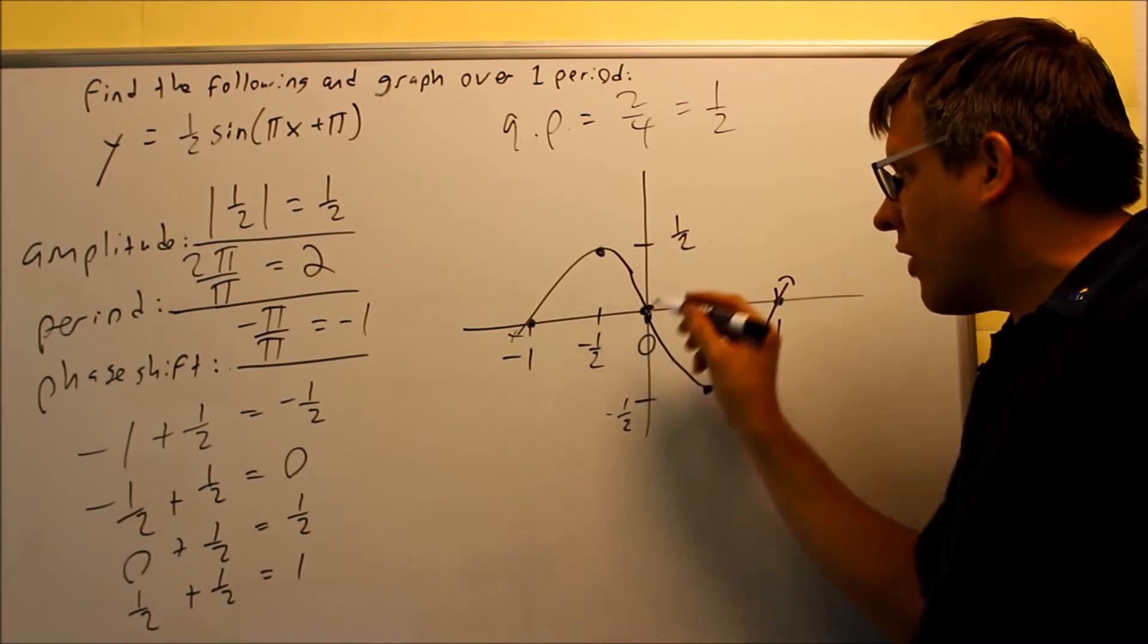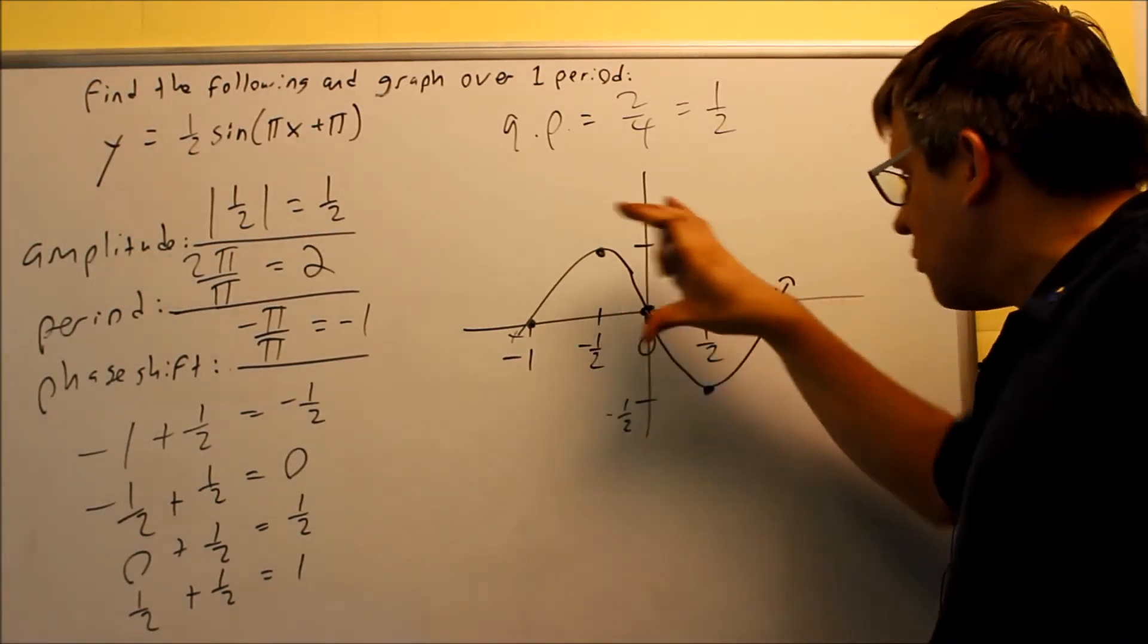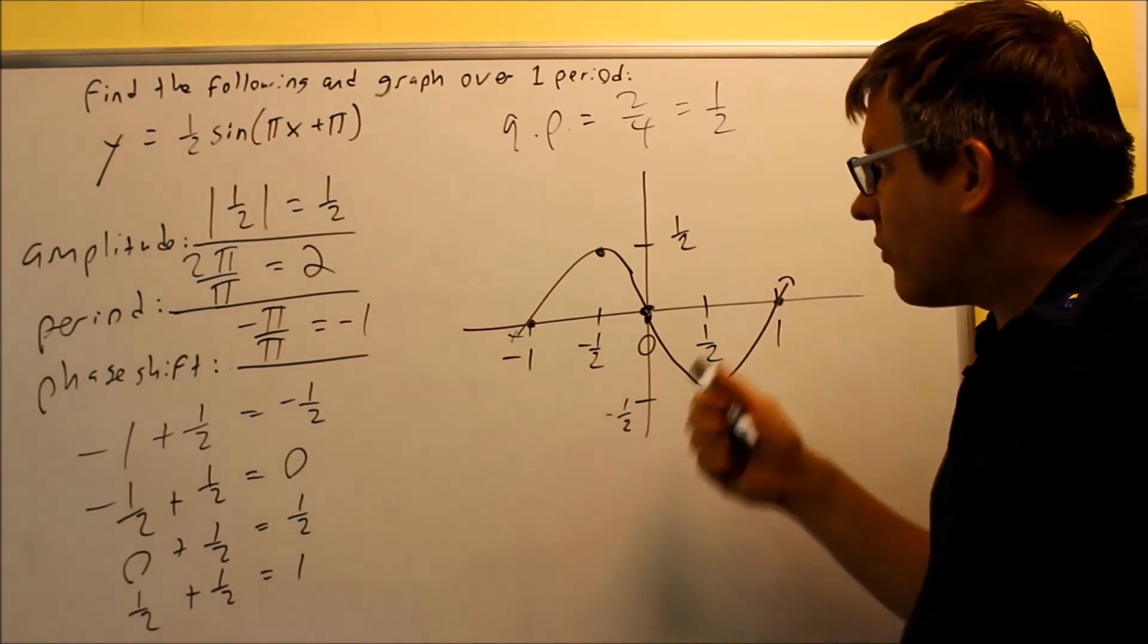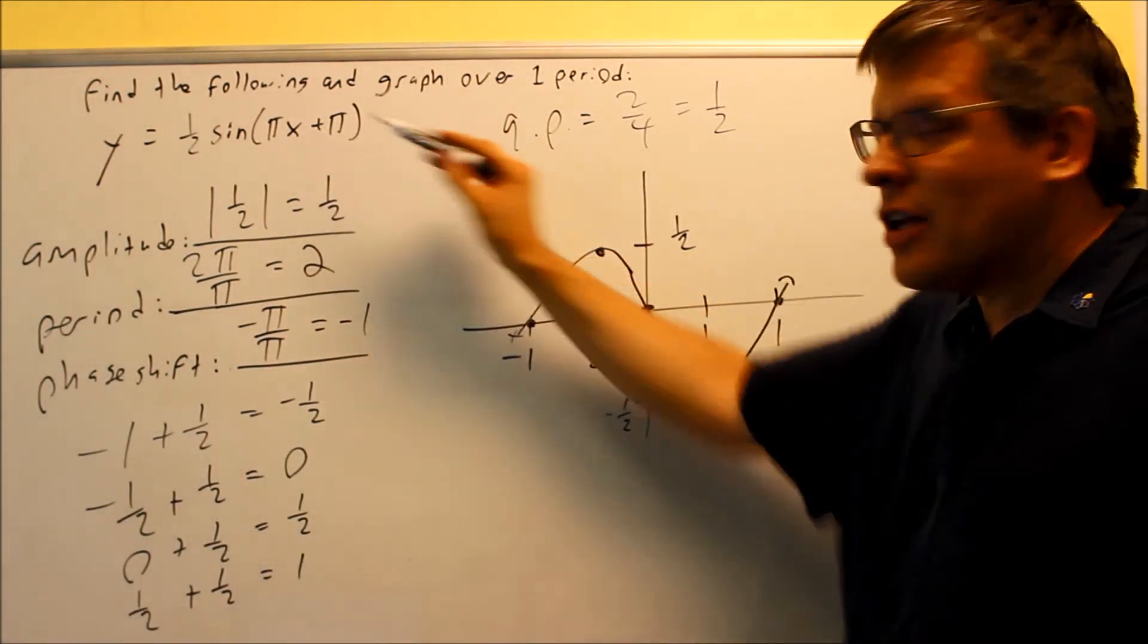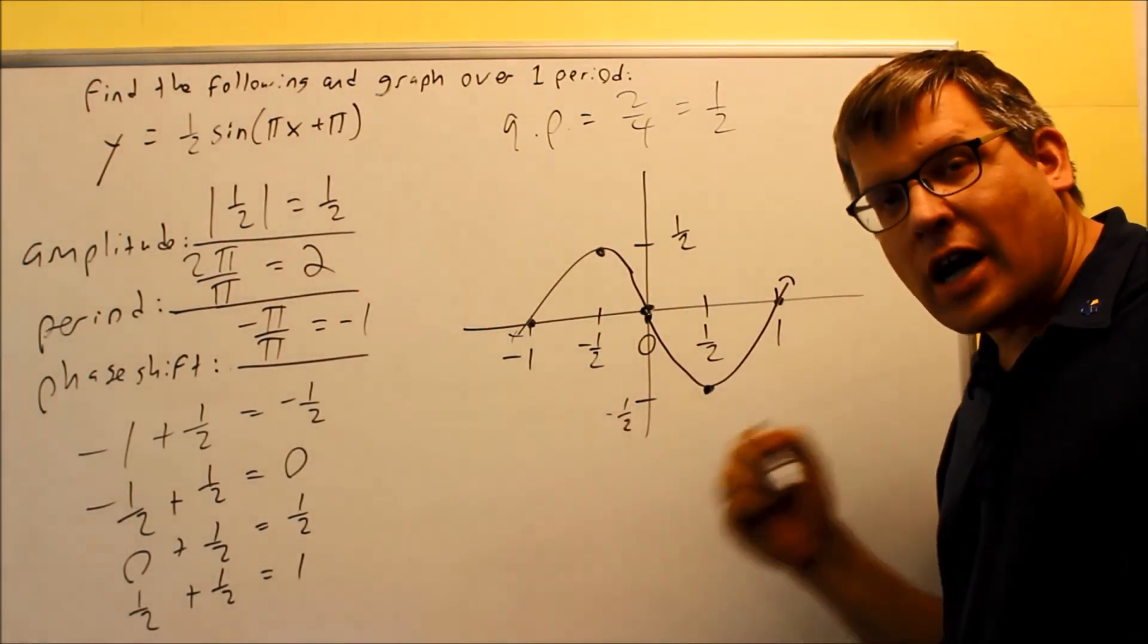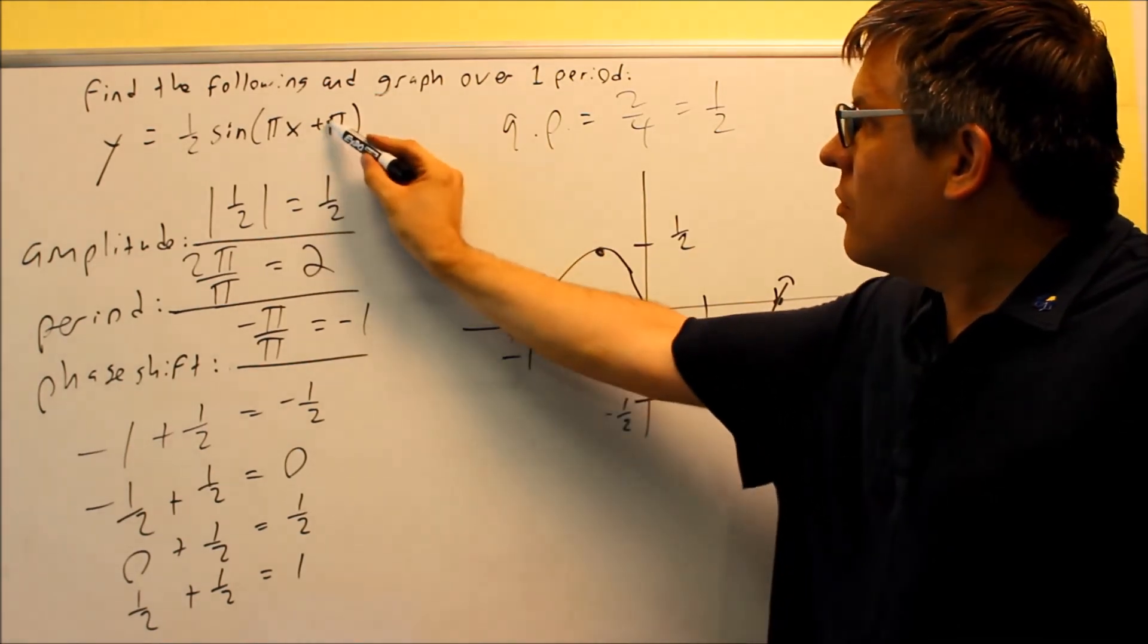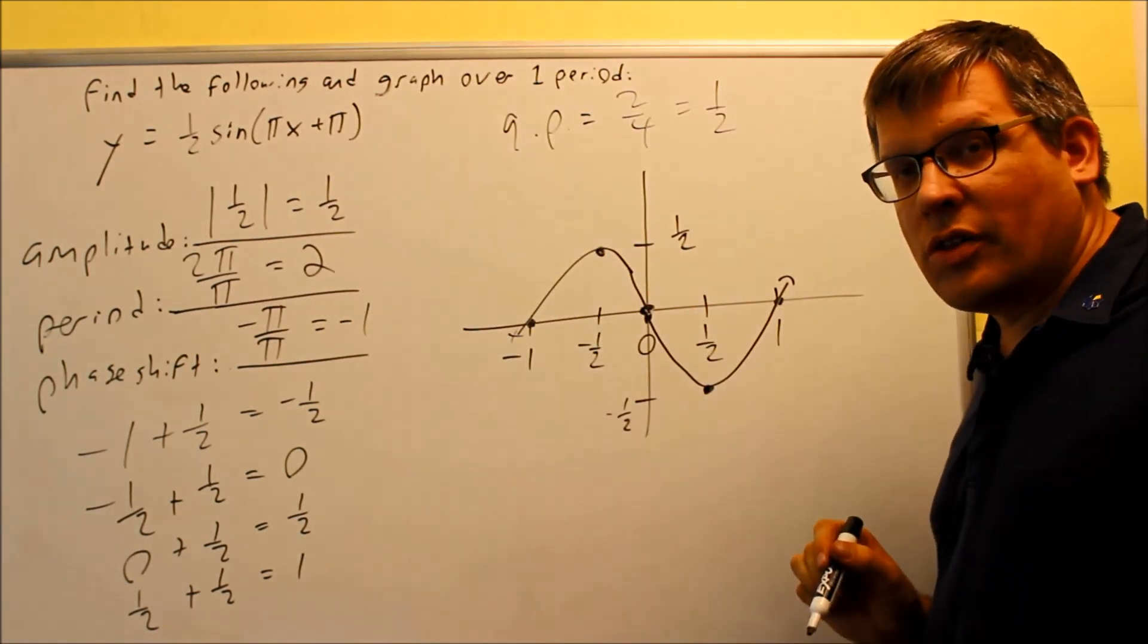So it's our normal sine graph, it goes up, it goes down, and back to here, but the only difference is the graph got moved over to the left, and any time you see a plus sign in here, a plus sign inside indicates that the graph will be moving to the left. Same way that you would have seen it when you did transformations in pre-calculus, that's the same idea here. The plus there means that you move everything over to the left.